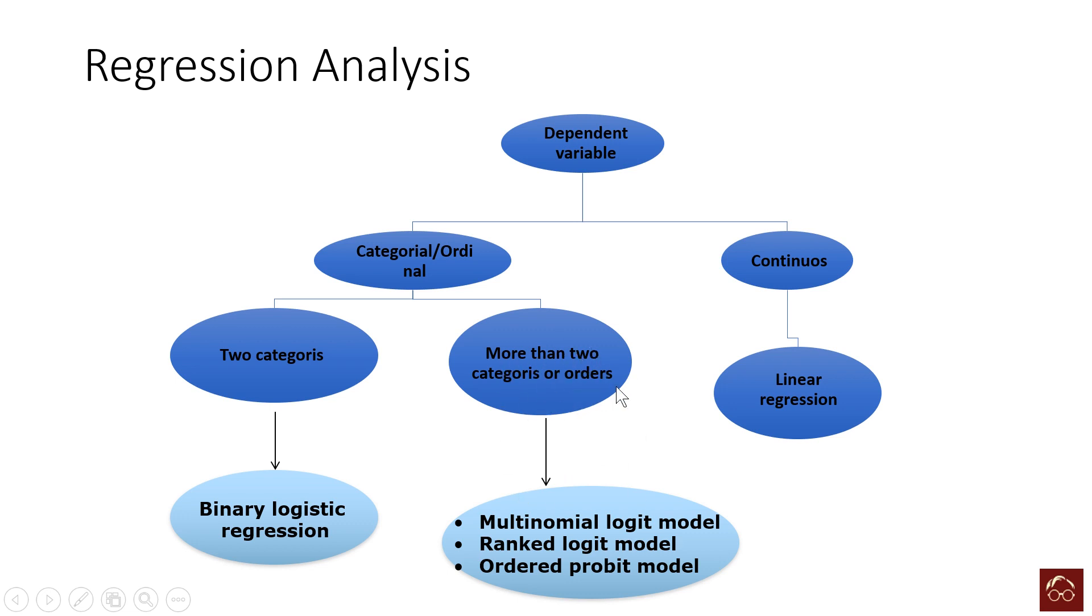If you have more than two categories or orders, then you will consider these models: multinomial logit model, ranked logit model, ordered probit model. So normally if you have more than two categorical variables, then you will go for multinomial logit model.